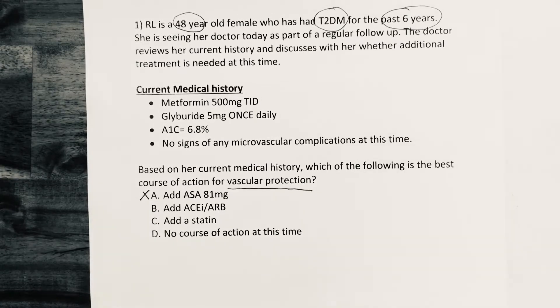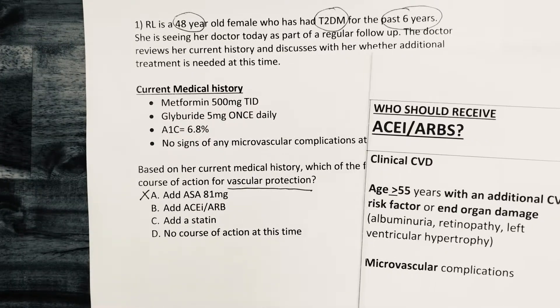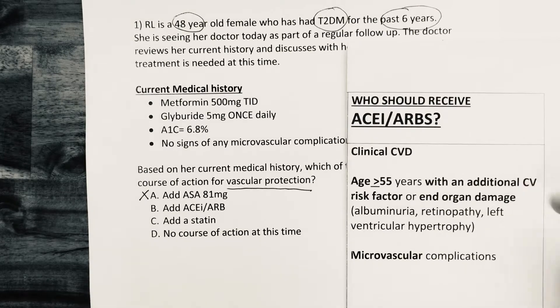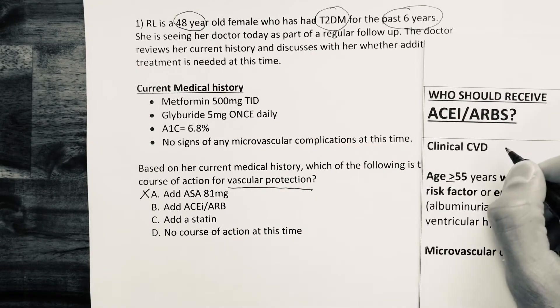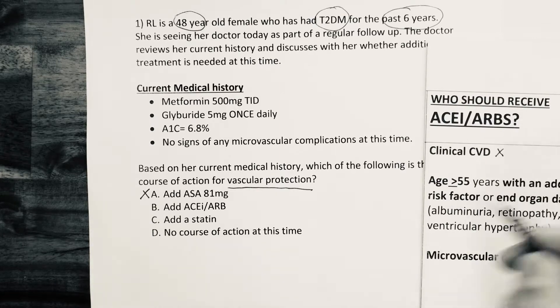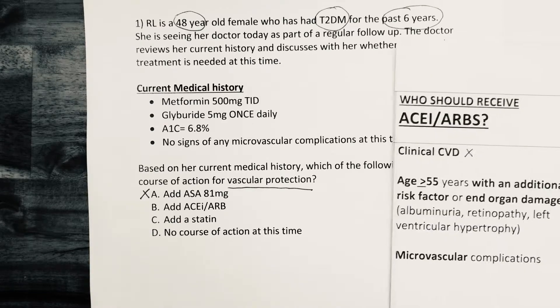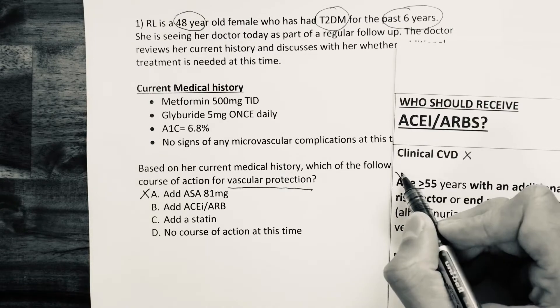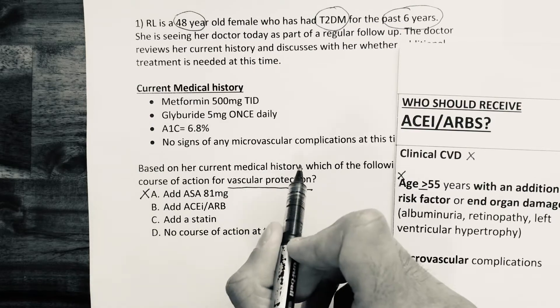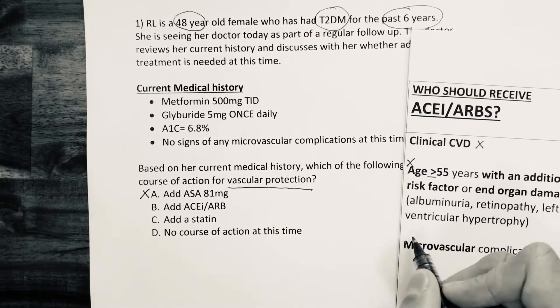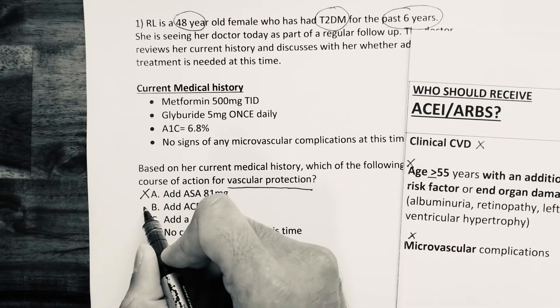Next, adding an ACE inhibitor or ARB. Here's a checklist for who should receive an ACE inhibitor or ARB. Does the patient have clinical cardiovascular disease? From her history, she doesn't — rule that out. Is she 55 years or older with additional CV risk factors or end-organ damage? She doesn't fall into that category — rule that out. Does she have microvascular complications? No signs from her history — rule that out. Conclusion: we are not going to add an ACE inhibitor or ARB at this time.